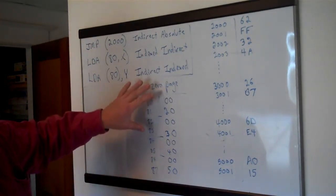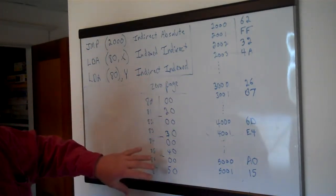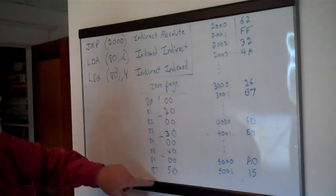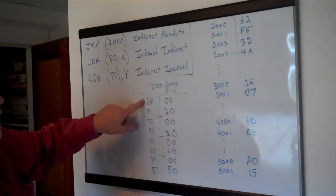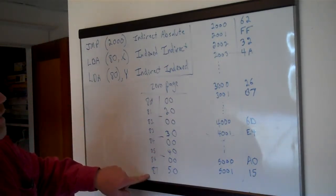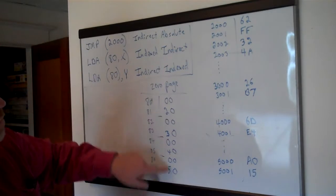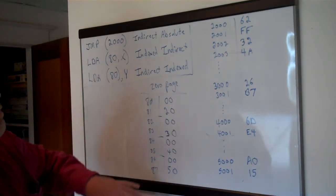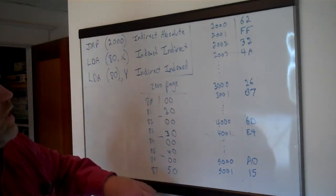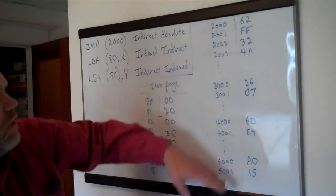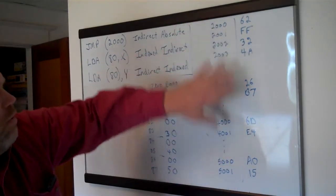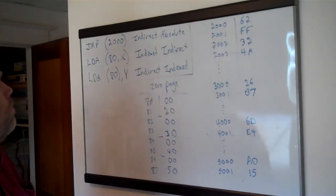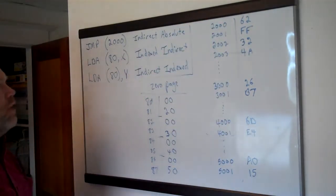We've got some sample locations here that we're going to work with — some in zero page starting at 80 going up to 87 — and these are the values that I put in them just for our example. And then this is just some areas out in memory that we'll be running into.